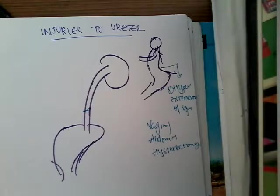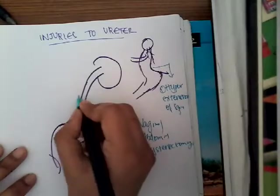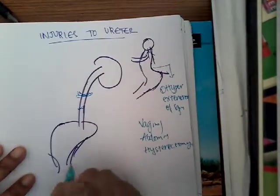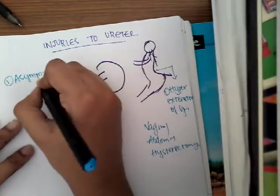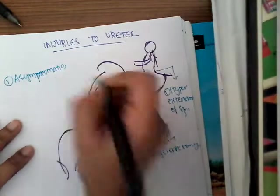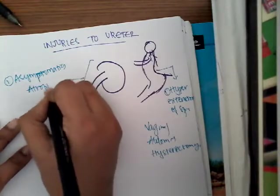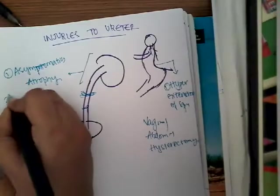If there is ureteric injury, a person can be asymptomatic initially. For example, if there is a hysterectomy and they have unknowingly ligated the ureter, the patient may be asymptomatic at first. Because the ureter was ligated, urine cannot be drained. As a result, there can be silent atrophy of the kidney because of this ligation.